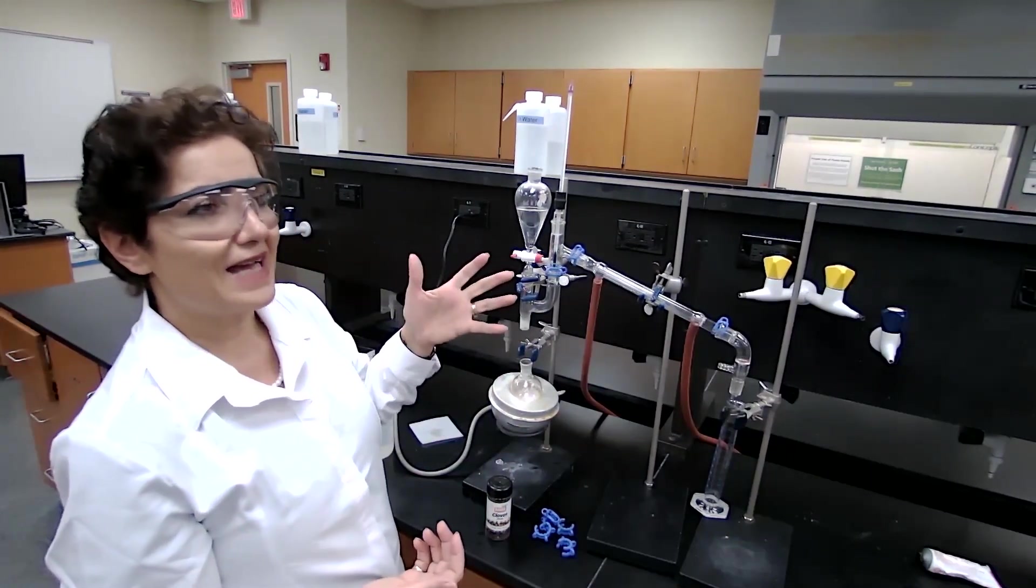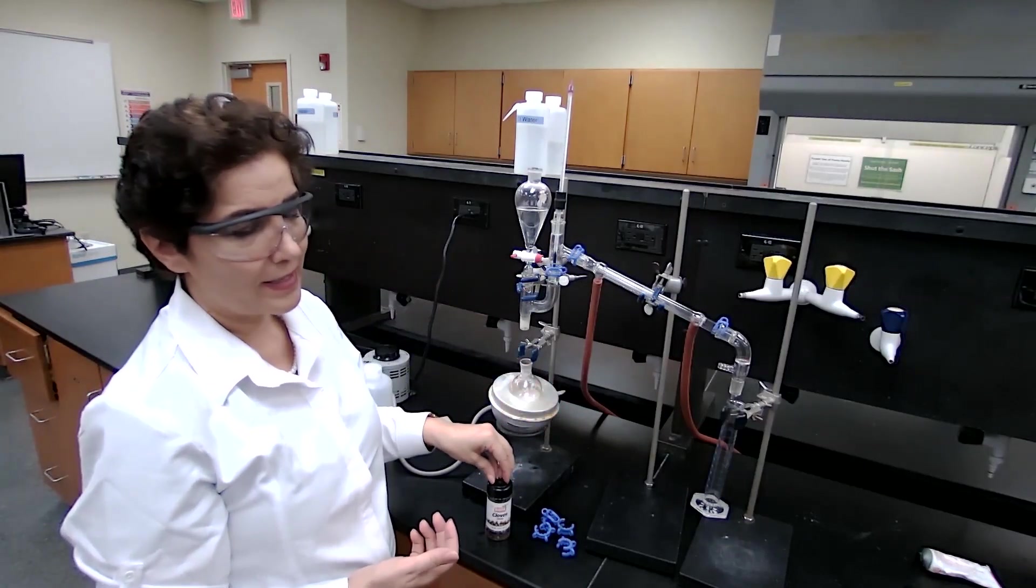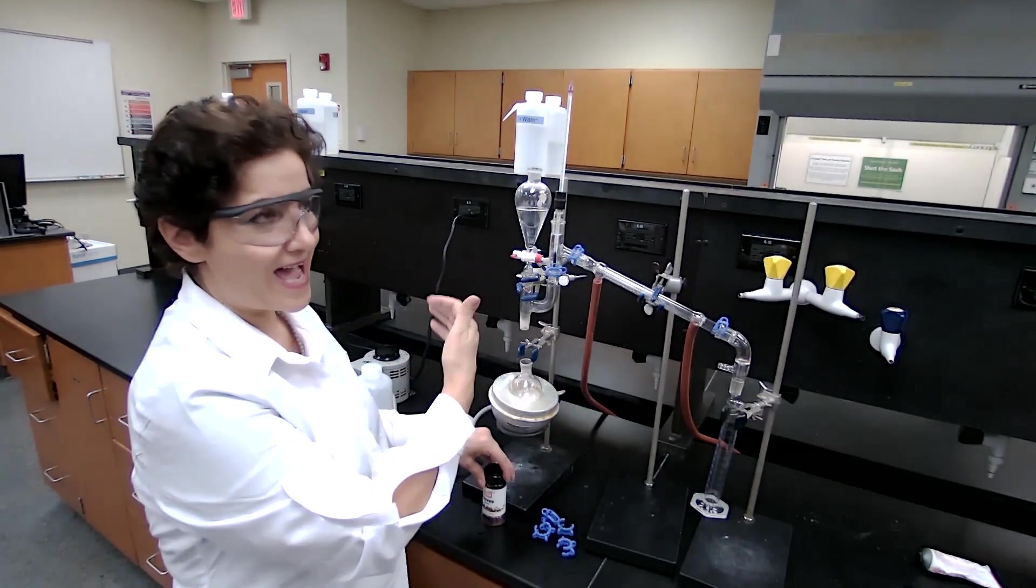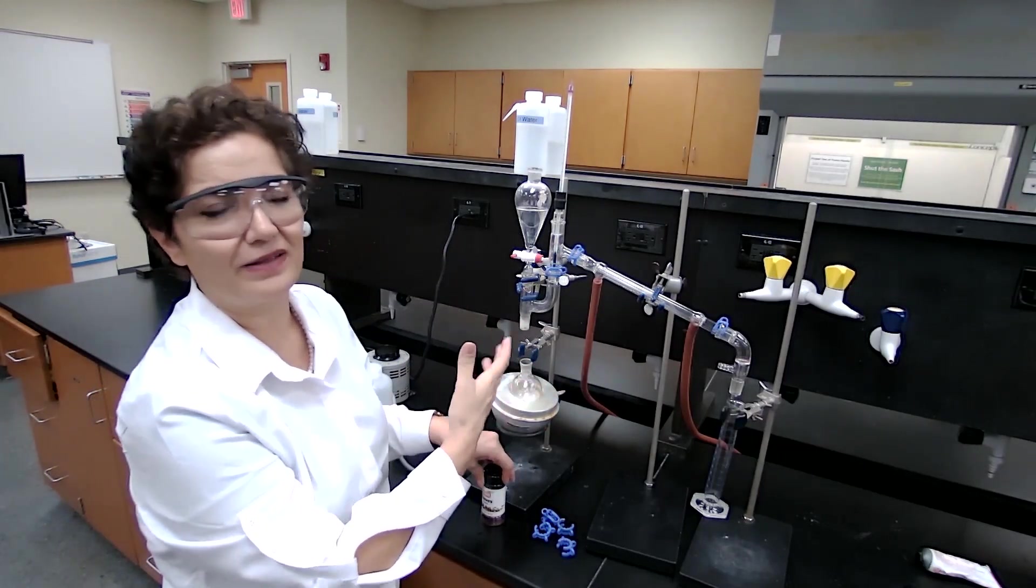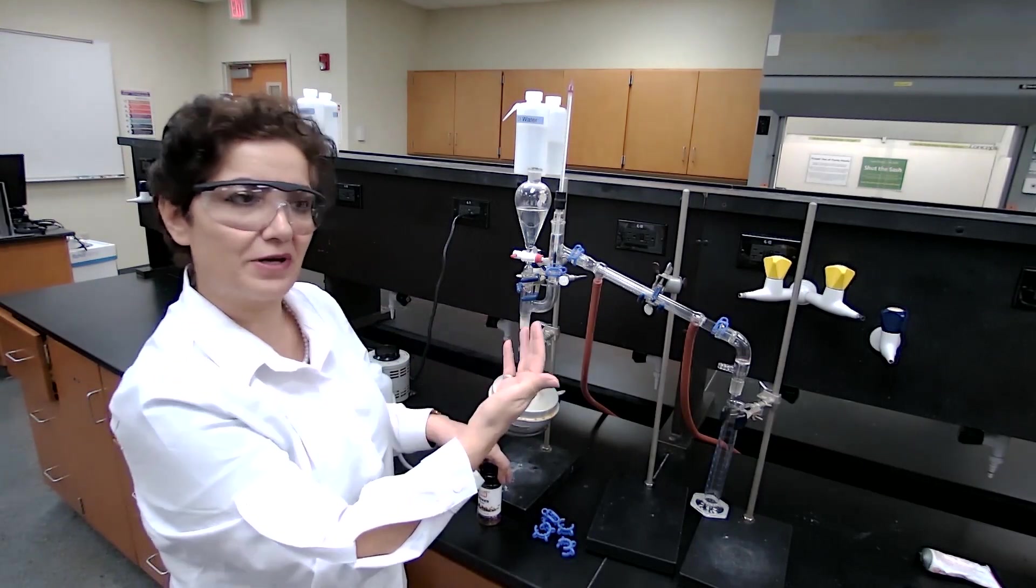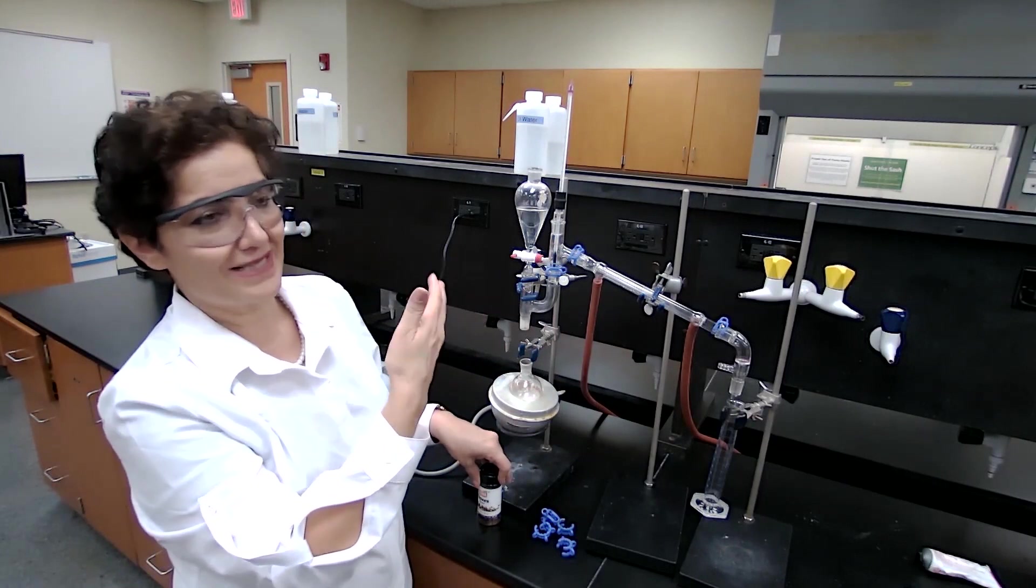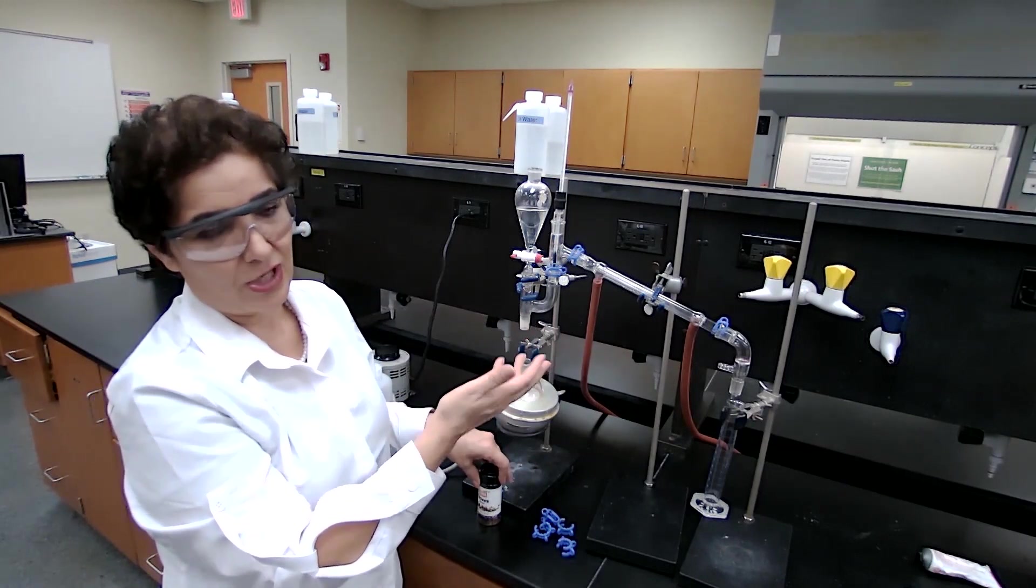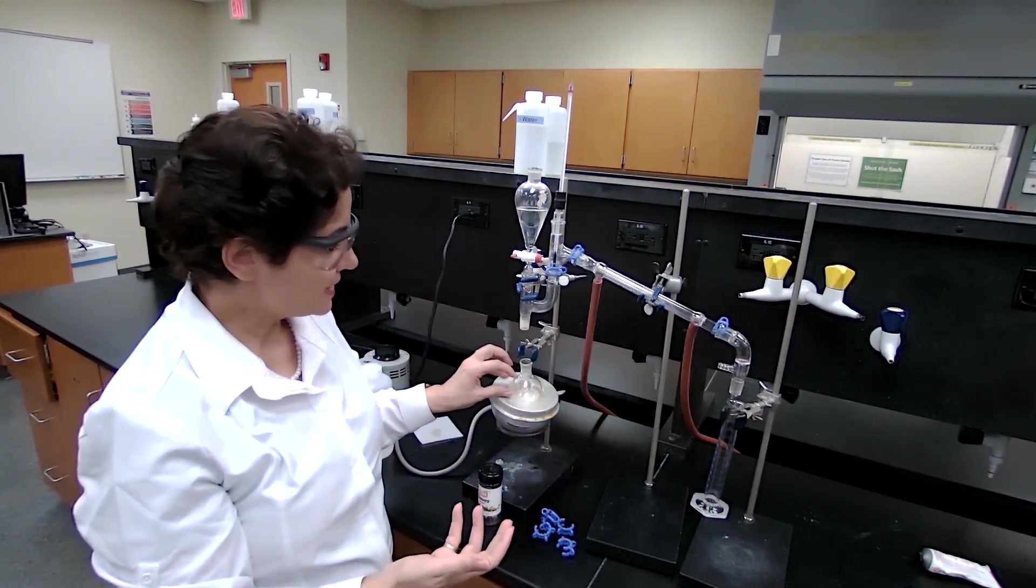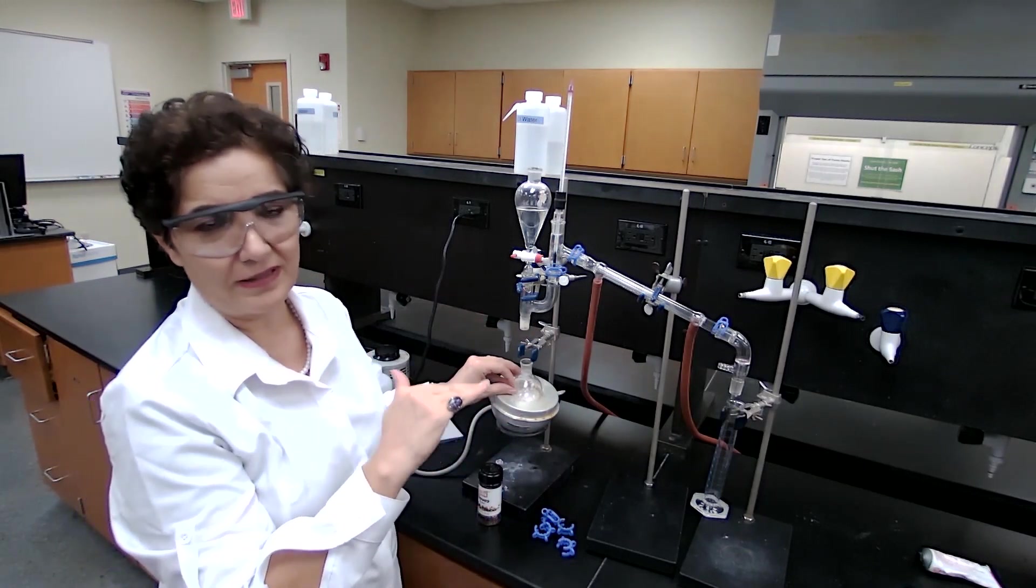So it's going to add some vapor pressure that is coming from the oil. Whatever is added, let's say only 20 units is added from the oil, then the water doesn't have to provide 760 millimeters. So if water provides only 740, that means the temperature doesn't have to reach 100. So overall, this mixture is going to boil under 100 degrees Celsius.